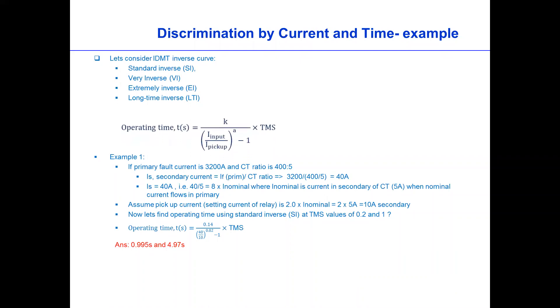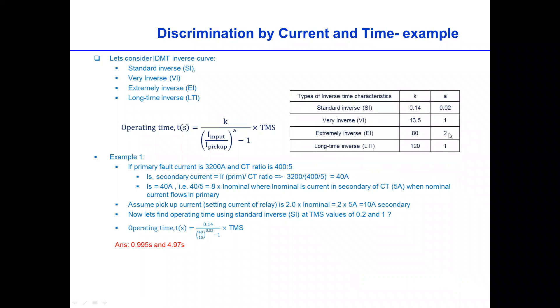So if we look now on this discrimination by current and time. If we consider we have IDMT curves and then we have an equation. So using this equation and this parameter provided, if for example in example one, if the primary fault current is 3200 amp and the CT ratio is 400 to 5 amp, then the secondary current can be calculated which is 40 amp and IR is 8 times the nominal current where the nominal current is 5 amp. So 5 times 8 is 40.